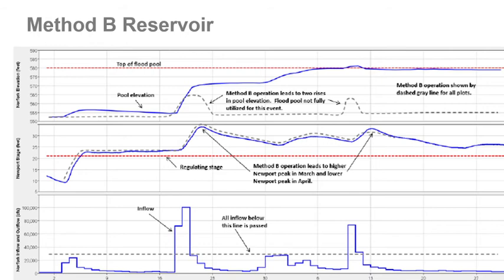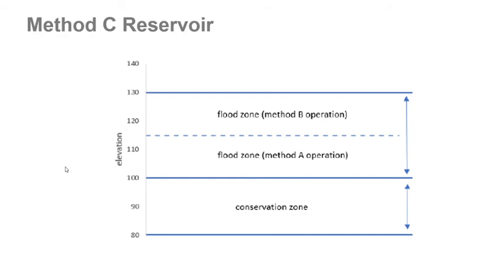I'm not saying Method A will always give a better result — whether it does is event dependent. So you might think: we don't really know whether Method A or Method B will give a better result since it depends on the event. You may still want some benefit for small and medium flood events but also want to attempt to have storage available if a large subsequent event occurs.